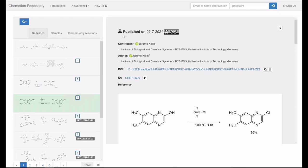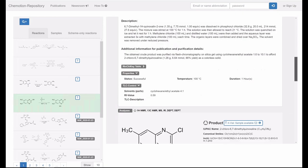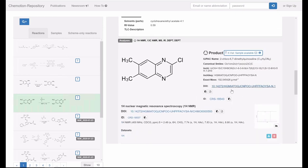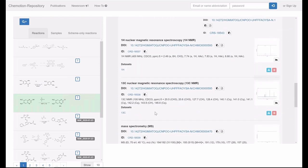The Chemotion repository attributes DOIs to all published datasets. DOI stands for Digital Object Identifier. These allow for an unequivocal assignment of each dataset to the publisher and researcher while simultaneously making the published dataset citable.